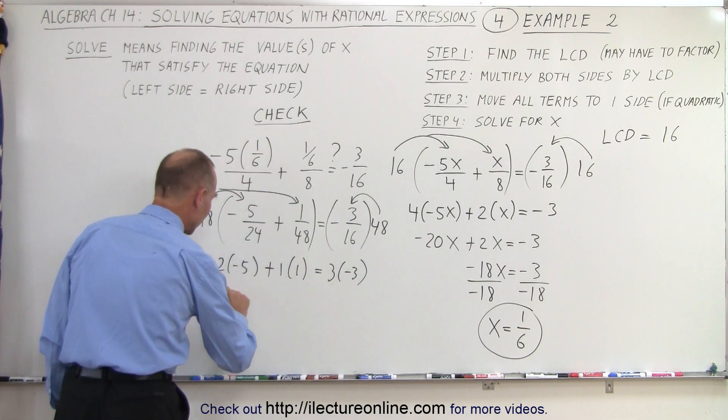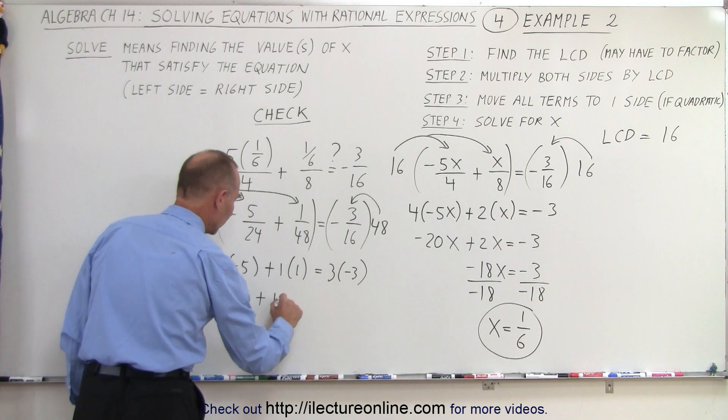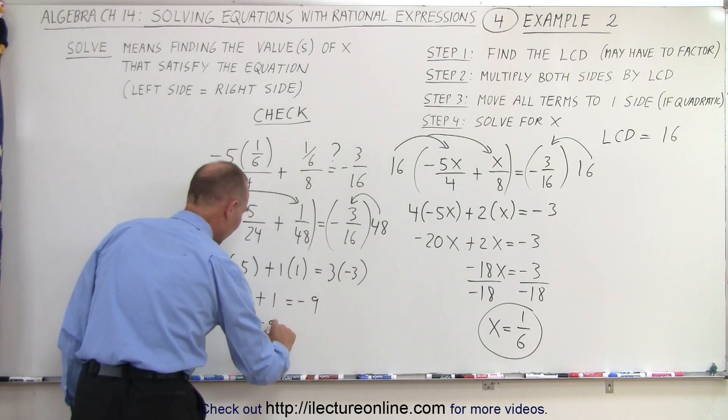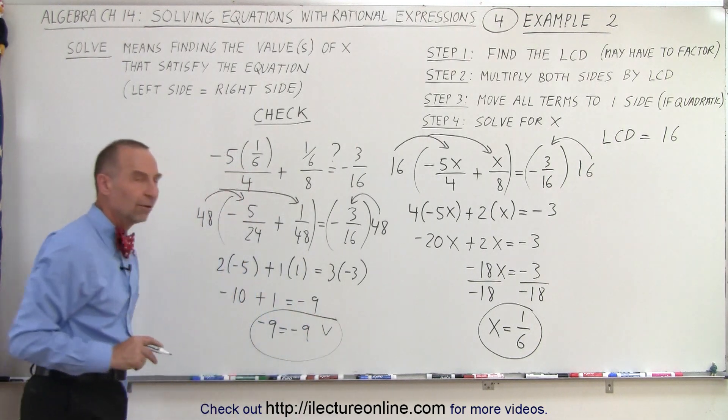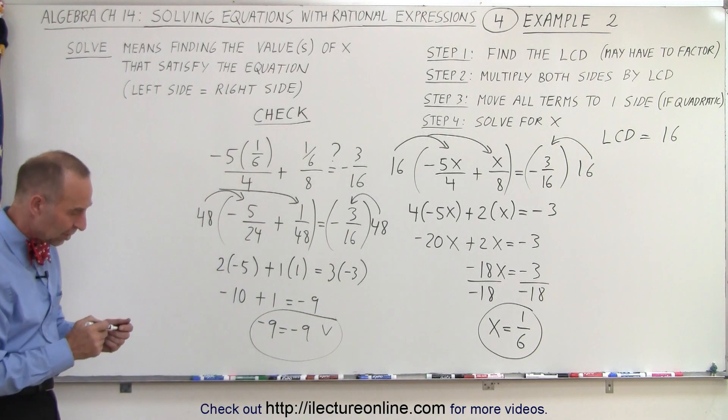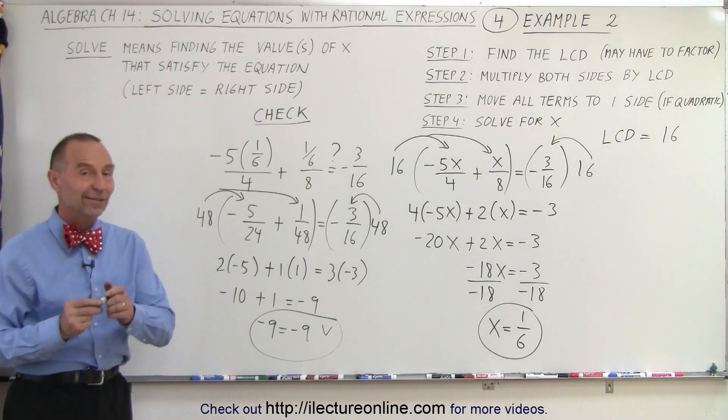Multiplying through, we get negative 10 plus 1 equals negative 9, or negative 9 equals negative 9. And so check. Yes, indeed. We verified that our answer was indeed correct, and that is how it's done.